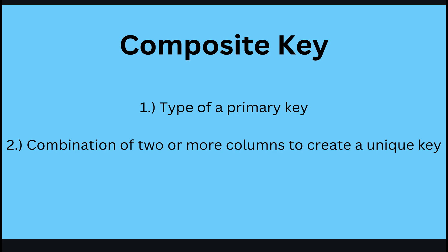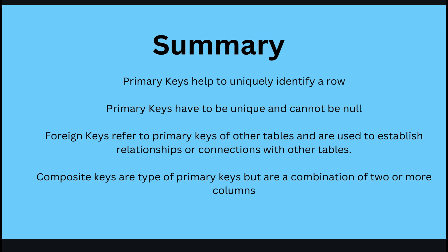Your composite key is a type of primary key, and it is usually a combination of two or more columns to create a unique key. So instead of using employee ID, passport number, phone number, or email address as your primary key, you use a combination of two columns — for example, employee ID and hiring date, or name and hire date — as the unique key to identify your rows.